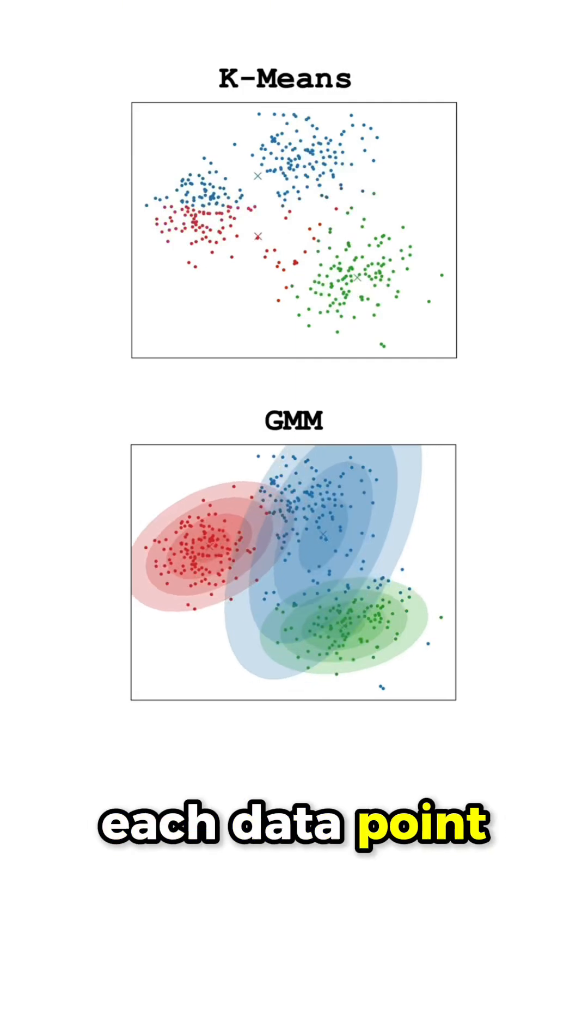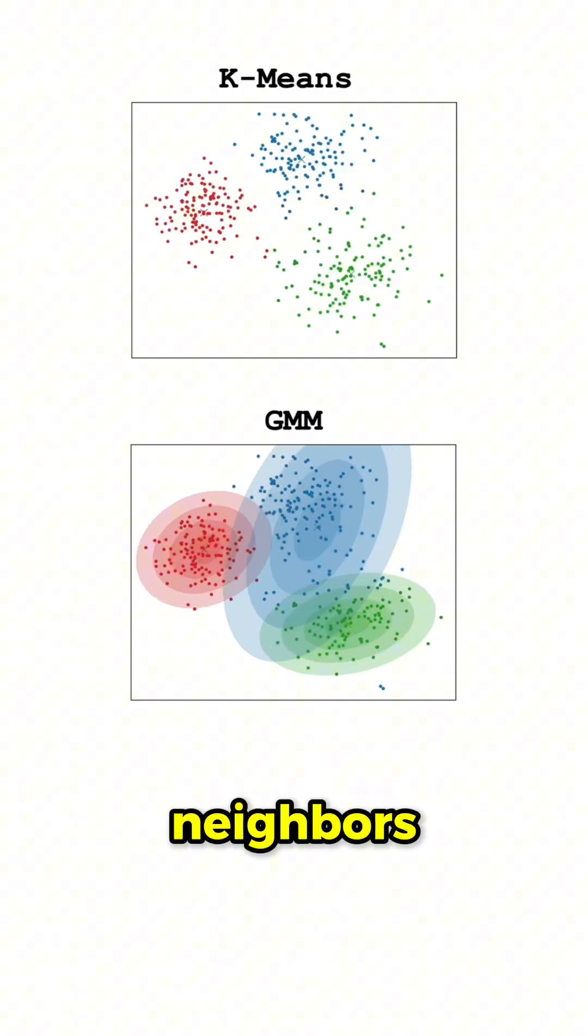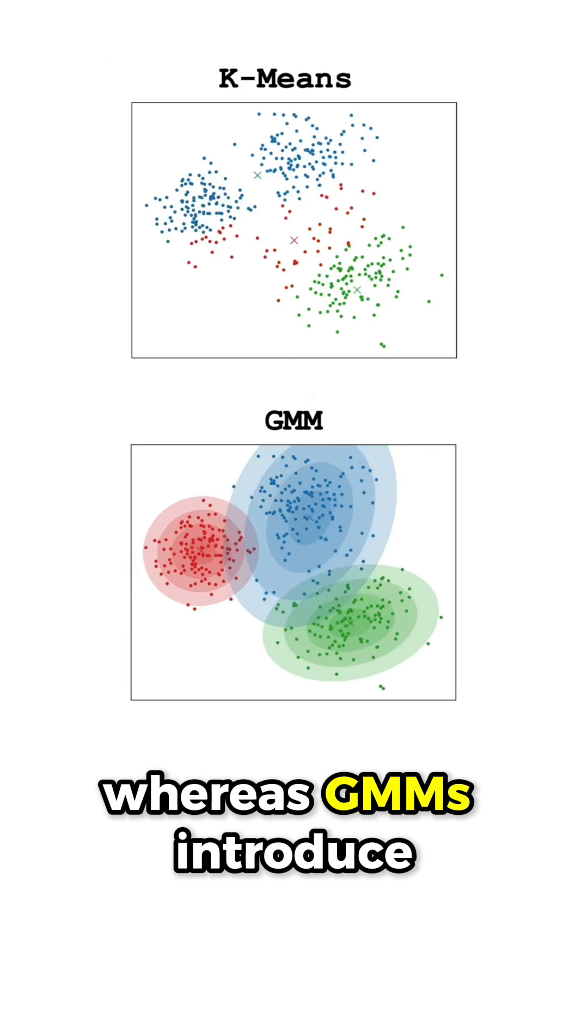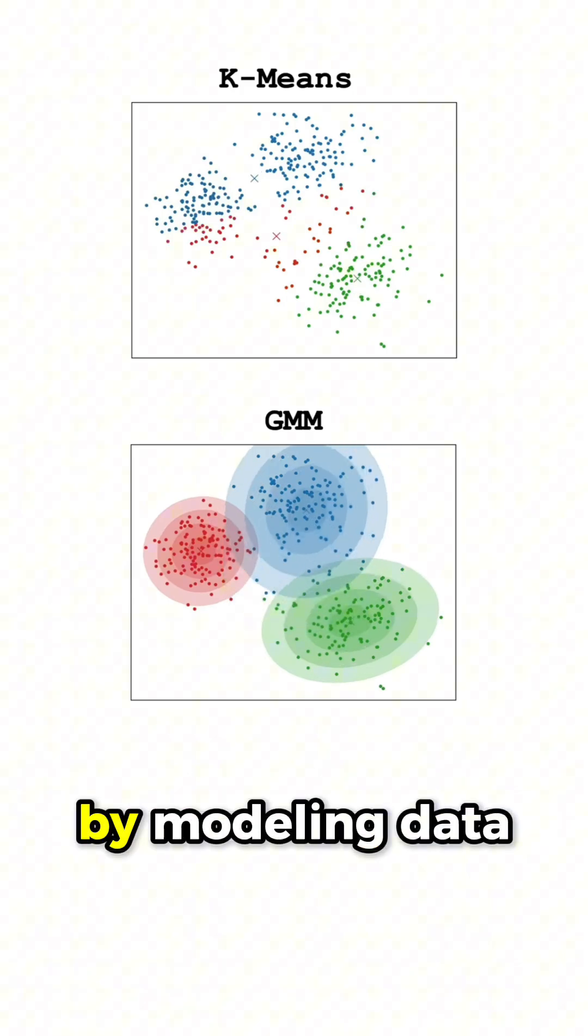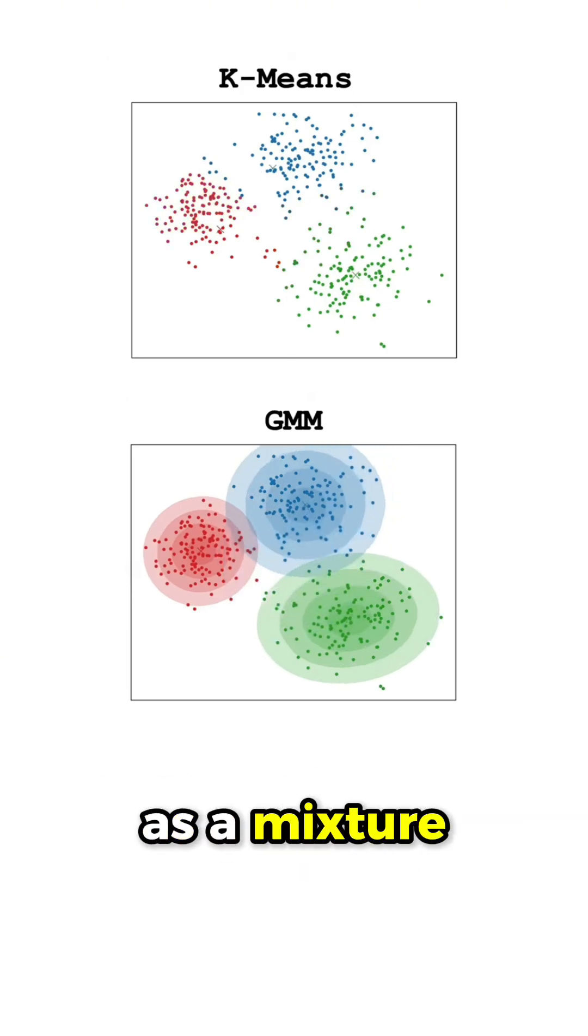K-means assigns each data point to the cluster of its nearest neighbors, whereas GMMs introduce a probabilistic approach by modeling data points as a mixture of multiple Gaussian distributions.